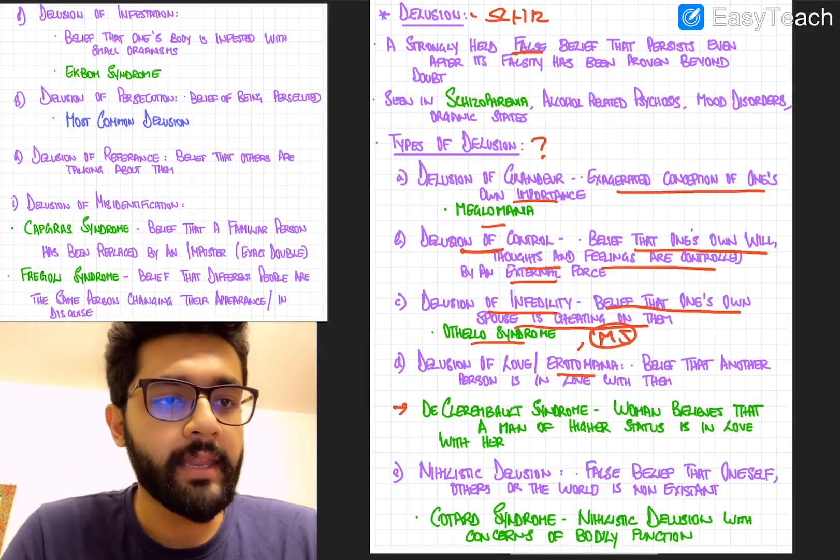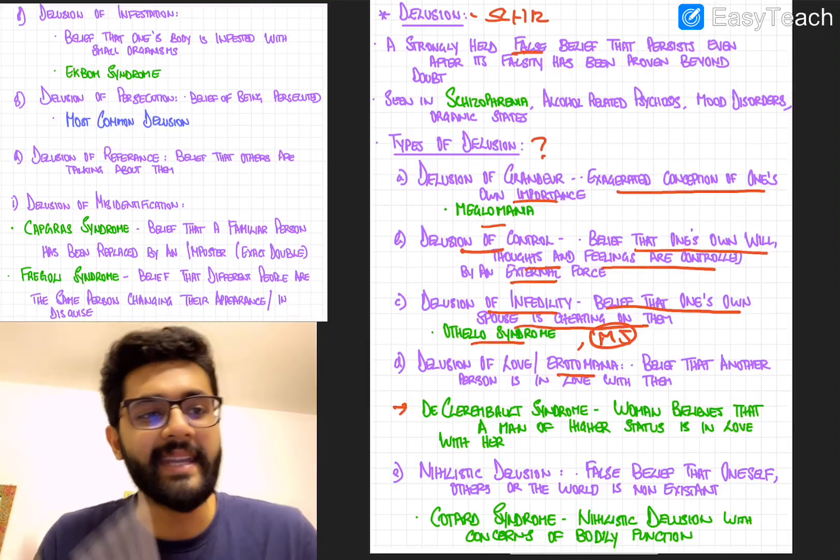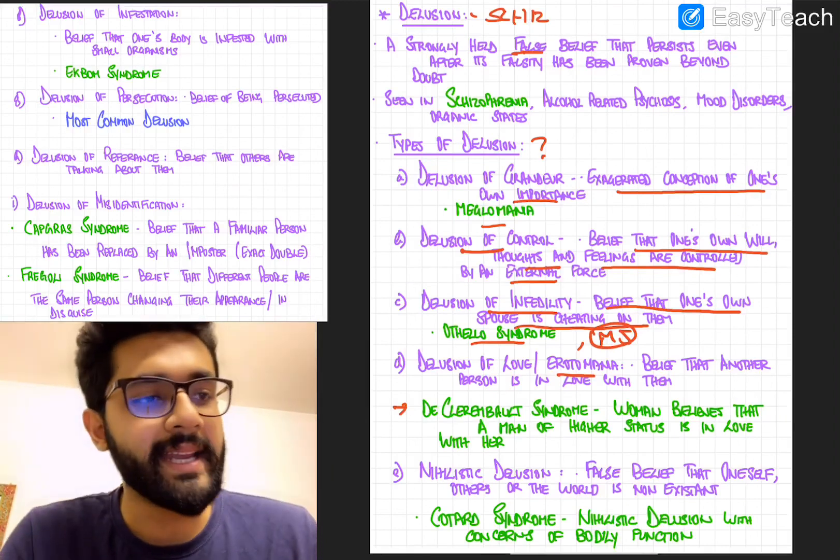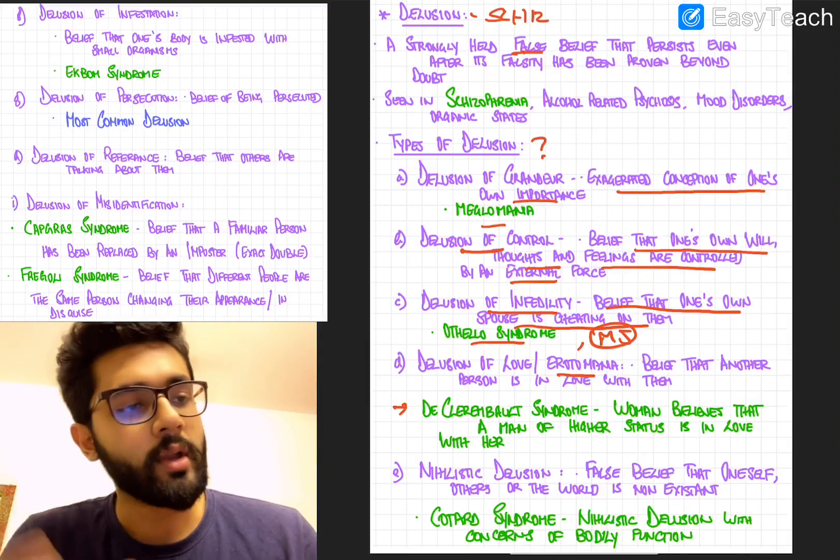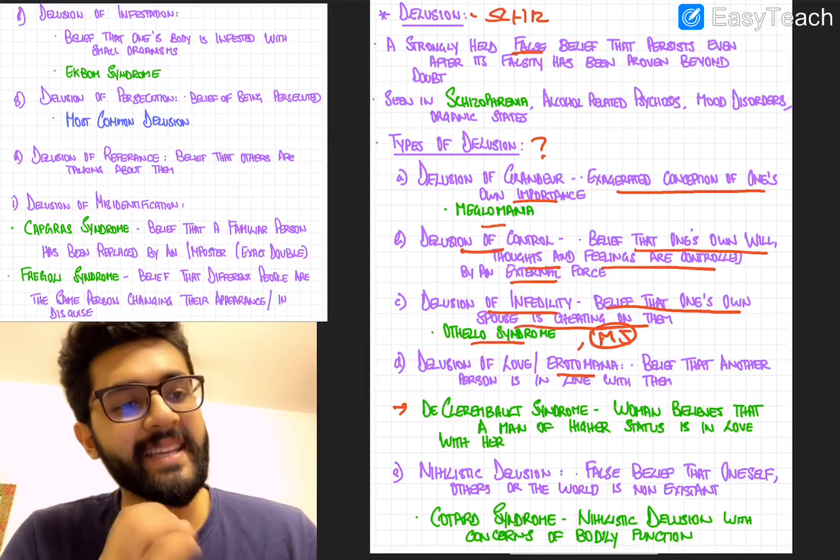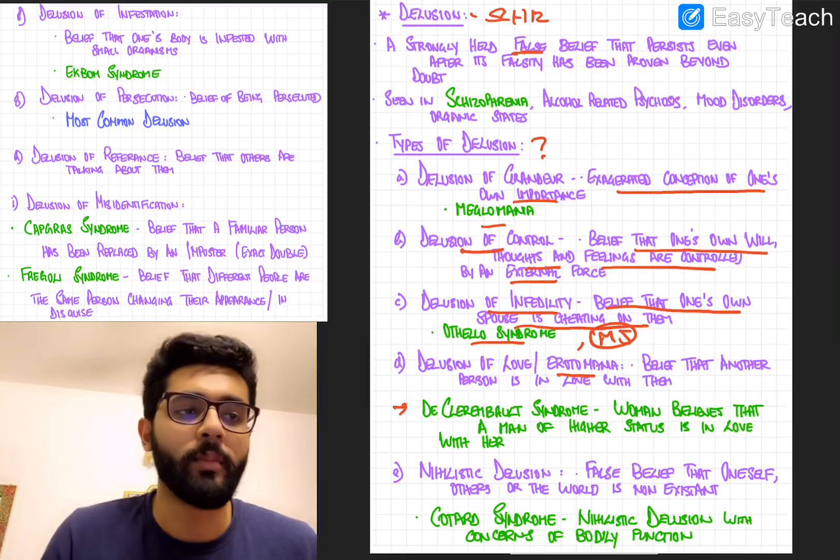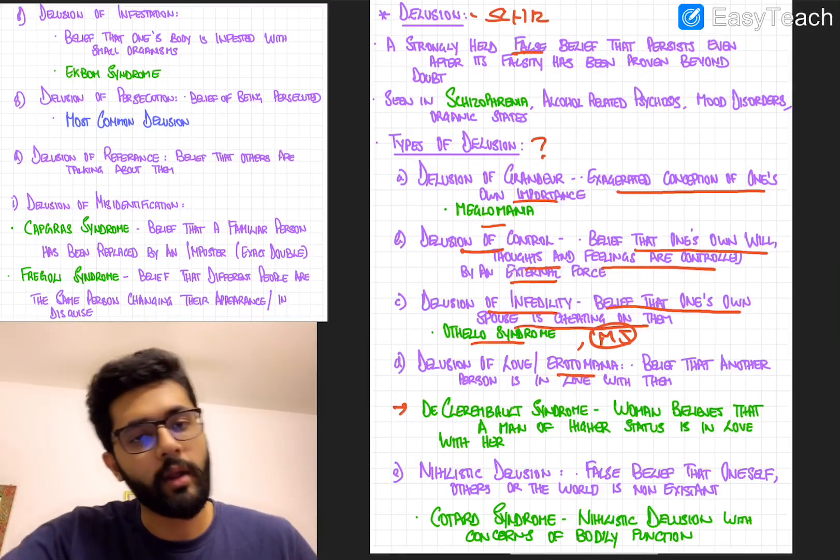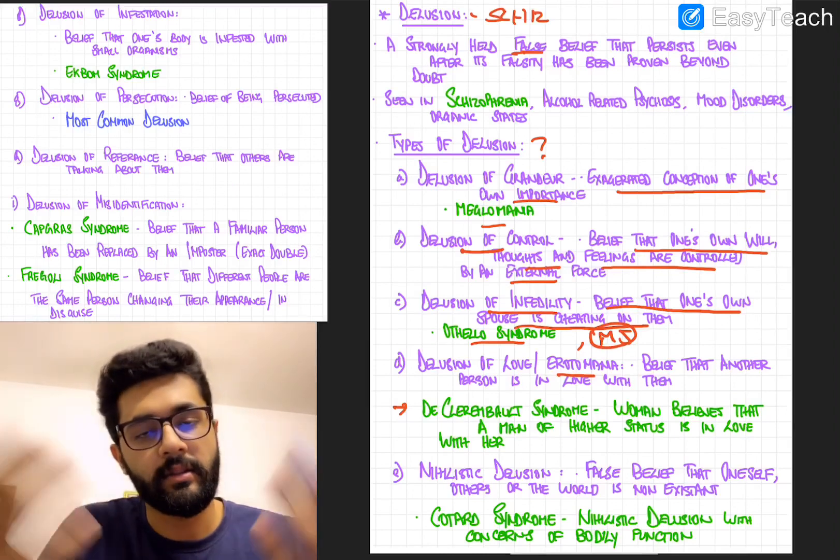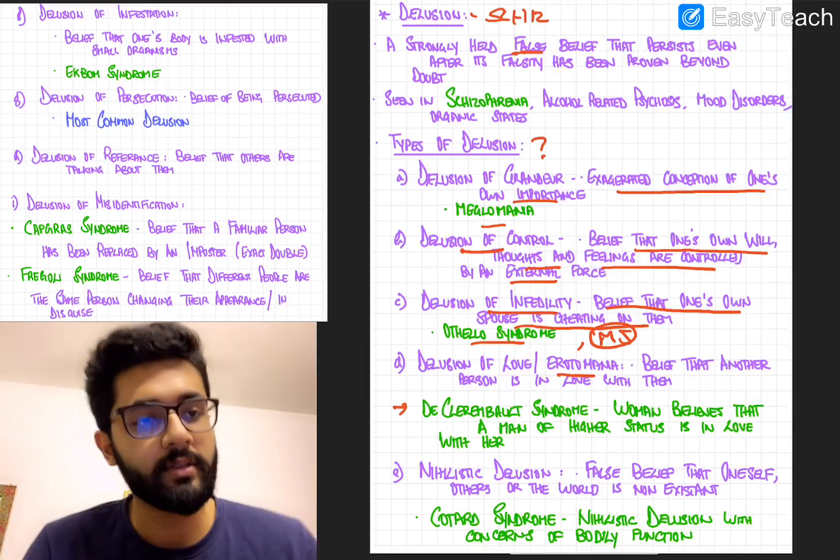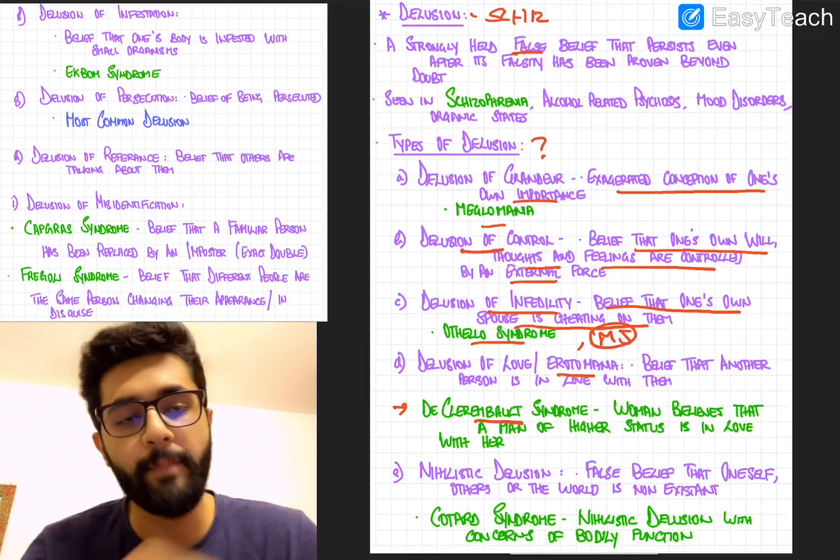So there is a variant or a subset of delusion of love called the De Clerambault syndrome. So the De Clerambault syndrome is a delusion where a young woman falsely believes that a man of higher status is in love with her. So usually a young woman feels that a man who's older or of higher societal status than her is in love with her. So that's called De Clerambault syndrome, a type of delusion of love.